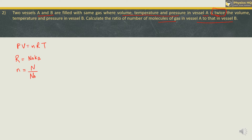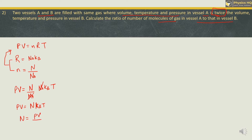Substituting into PV = nRT: replacing small n with N/Nₐ and R with Nₐ × K_B × T, the Nₐ terms cancel, giving PV = N·K_B·T, where K_B is Boltzmann constant. So we can write N = PV / (K_B·T) as the number of molecules.